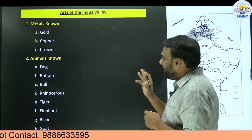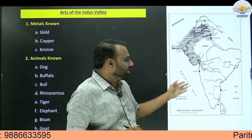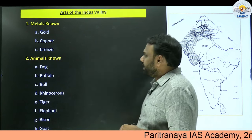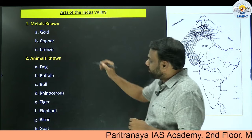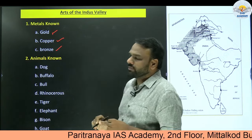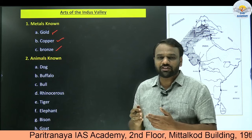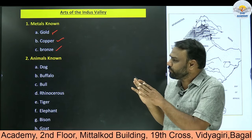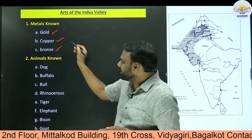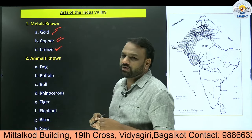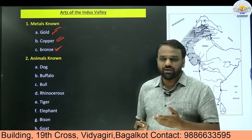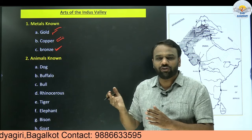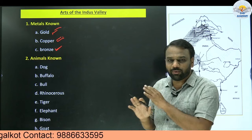First, we shall begin with metals known. The metals known to the Indus Valley civilization were gold, copper, and bronze. In a few other books there may also be reference to other metals, but we need to reduce our burden and stick to what is present in this chapter. After completing all the syllabus, if there is sufficient time, then we can explore extra information, but initially this information would be more than sufficient.